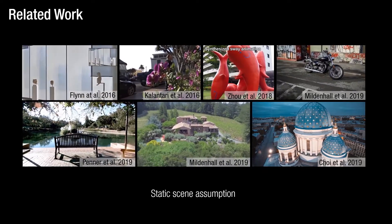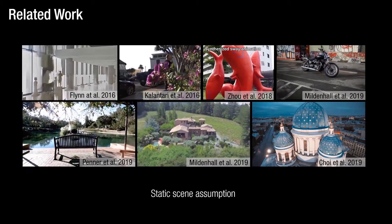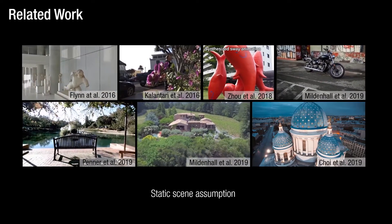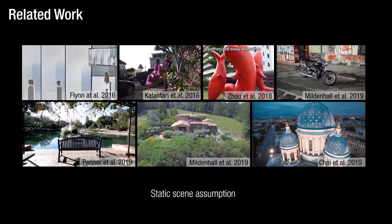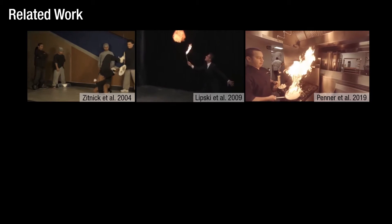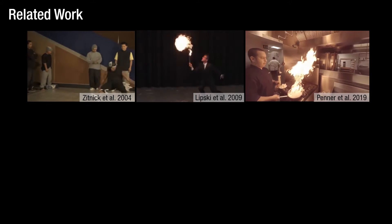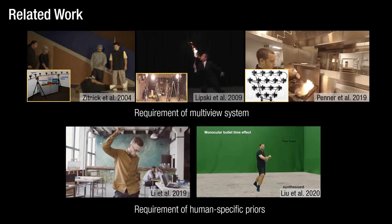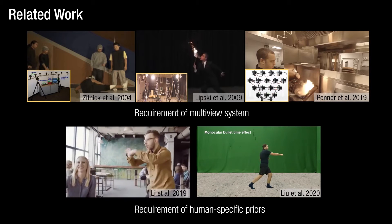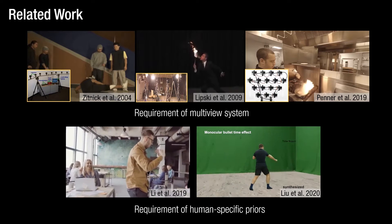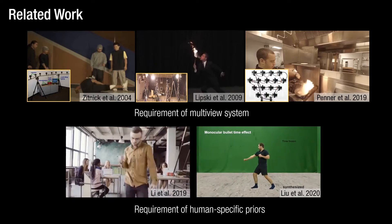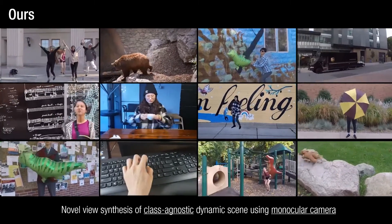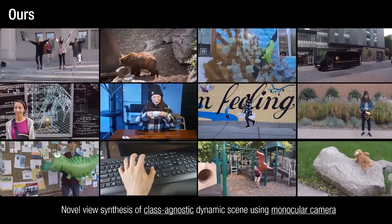Many existing methods are limited to static scenes, and dynamic content is considered an outlier despite being a major focus in videography on social media and otherwise. Several existing works have shown promising results on dynamic scenes; however, they require a synchronized multi-view system where the same geometric principles can be applied as in static scenes. Recently, a few methods enabled dynamic scene view synthesis using a monocular camera, but they require a class-specific prior such as human. Our method is applicable to a general dynamic scene captured from a monocular camera.